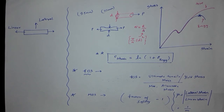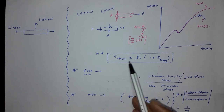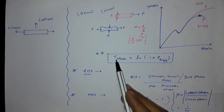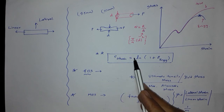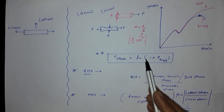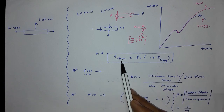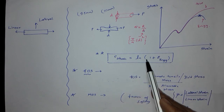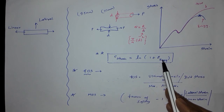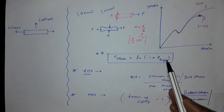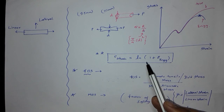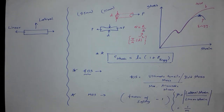This is a common difference between true and engineering. Just remember this relation, as I will ask questions on it. True strain equals natural log of one plus engineering strain — that is, true strain equals ln(1 + engineering strain). This is an important concept.